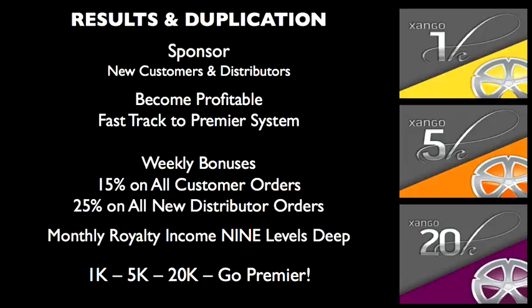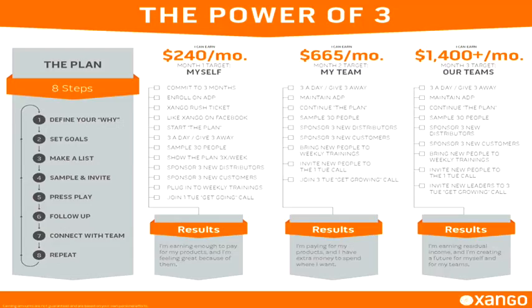So we're going to sponsor customers and distributors so we can become profitable and fast-track to Premier weekly bonuses: 15% on all customer orders, 25% on all new distributor orders, and then our monthly royalty income through nine levels of referrals. How do we do this? It's simple — we focus on the Power of Three. We focus on three people, three teams — three people who want to do the business, not just three customers who order products, but three teams.